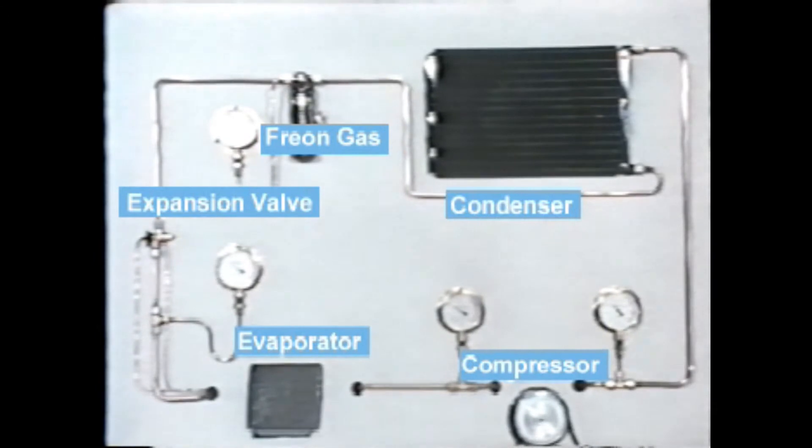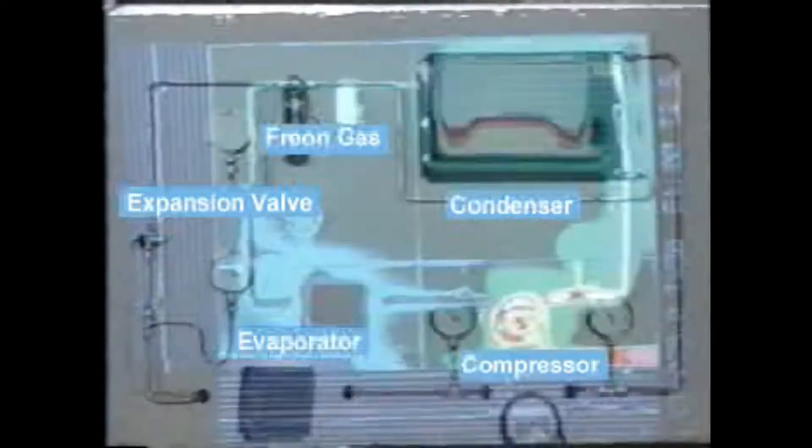Now we'll follow the processes by means of an infrared camera especially designed to catch the surface temperature. Here we can see how the freon takes heat from the surrounding object in the evaporator, while in the condenser high temperature freon is releasing heat.